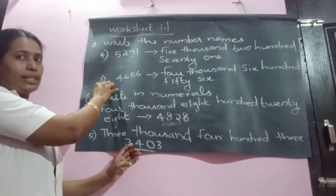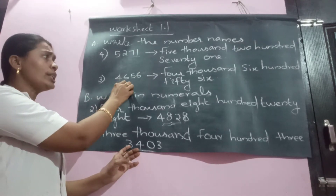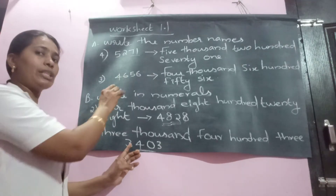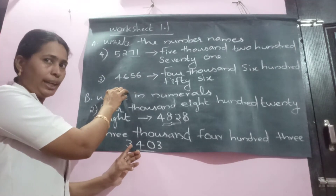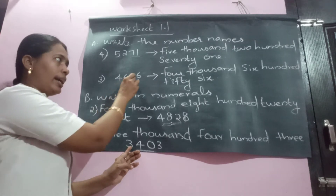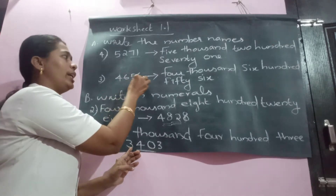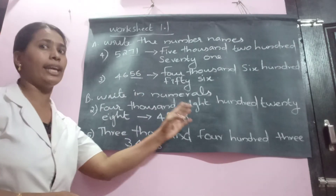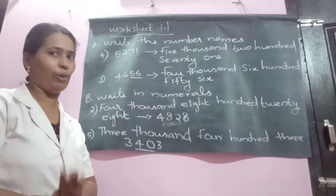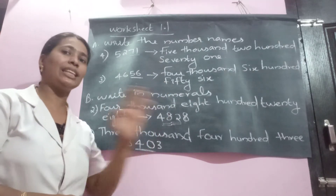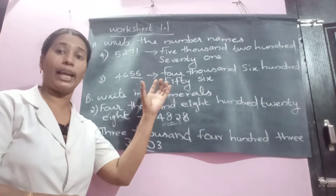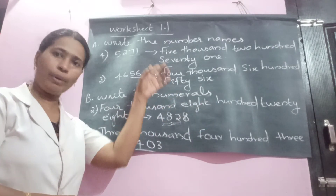The third question has the number 4, 6, 5, 6. Since there are 4 digits, the first place is thousands. So we have 4,000, then 600. The last two digits are 5 and 6 — we read them together as 56, not as 5 tens and 6 separately. So the answer is four thousand six hundred fifty-six. You can write the remaining questions yourself; if you have any doubt, you can ask.